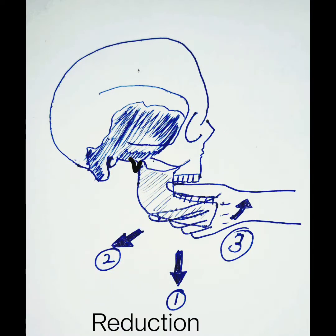This is a pictorial diagram demonstrating the reduction of the temporomandibular joint via the intraoral route. Here the patient is placed in a sitting position and the physician stands facing the patient at 11 o'clock. Now place your thumb upon the lower molars with your fingers wrapped externally around the mandible.